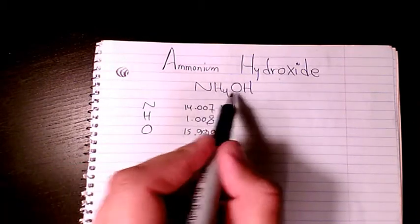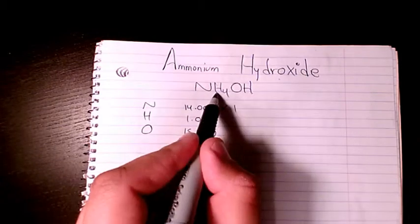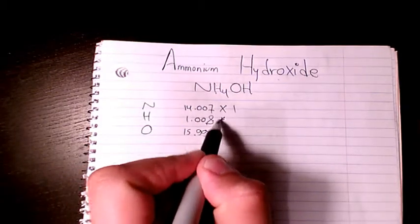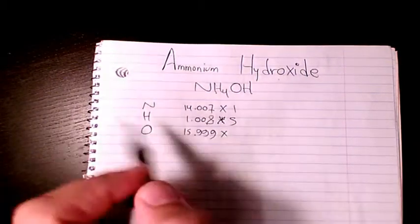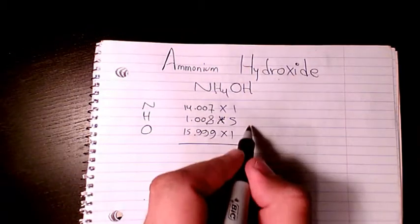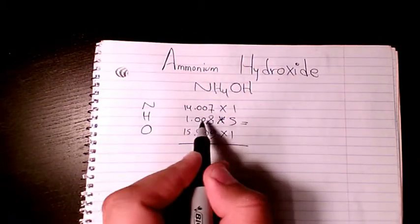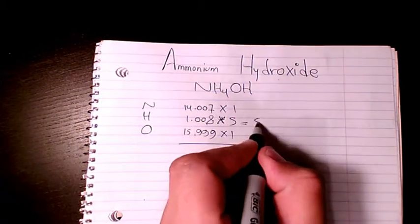We have four plus one, four plus one, so it's going to be multiplied by five. And then oxygen is one. So one times five times 1.008 is going to be 5.04.